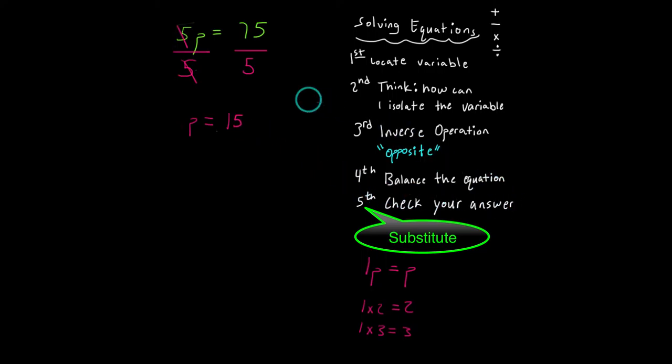So now step five is to check your answer. We're going to substitute 15 back into the original equation for p. So now I'm going to rewrite that original equation as five times 15 is equal to 75.